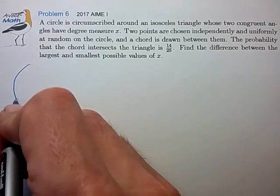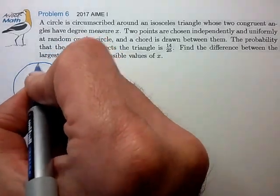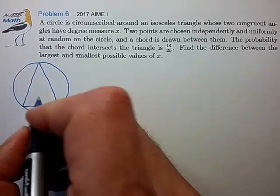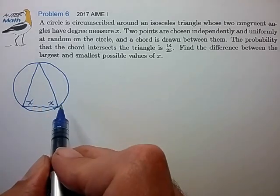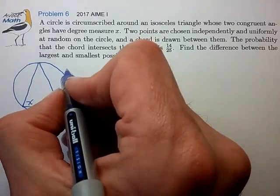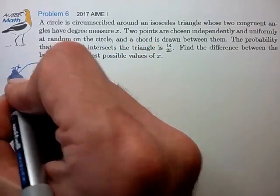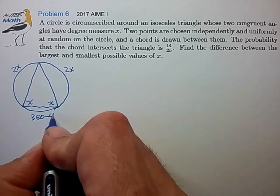Let's draw this out. It looks like we have a circle circumscribed around an isosceles triangle with base angles X, and that specifies the arc length around this circle. We have an arc length of 2X, 2X, and 360 minus 4X.